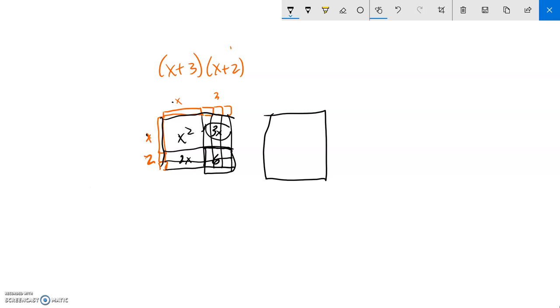So to do this multiplication, we actually don't need to draw them all out. Why don't we just say x plus 3 times x plus 2, and then multiply that way. x times x is x squared, 3 times x is 3x, x times 2 is 2x, 2 times 3 is 6. So we have x squared plus 5x plus 6.